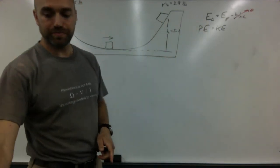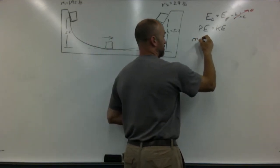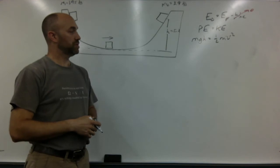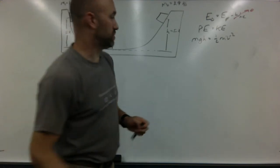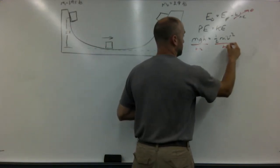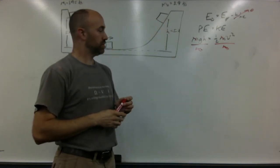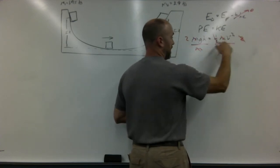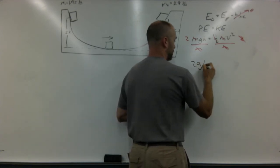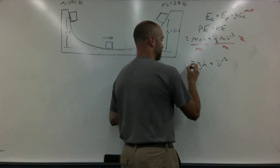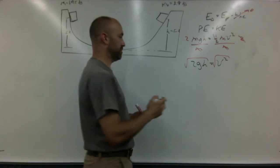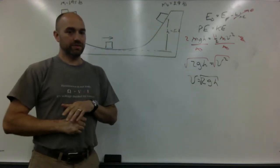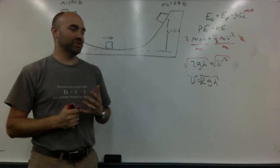Nobody's pushing on it and there's no friction. So we just say mgh equals one-half mv squared. Divide both sides by m, multiply both sides by two — that cancels the half — so 2gh equals v squared. Now take the square root of both sides, and that gives you the final speed.